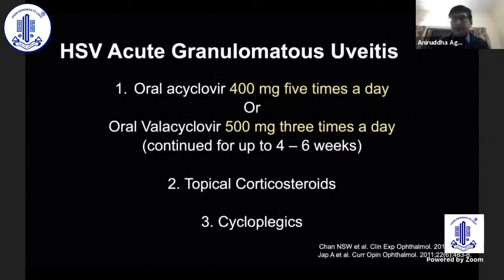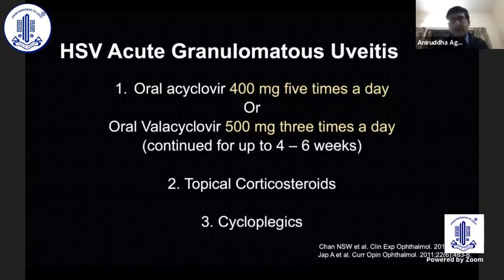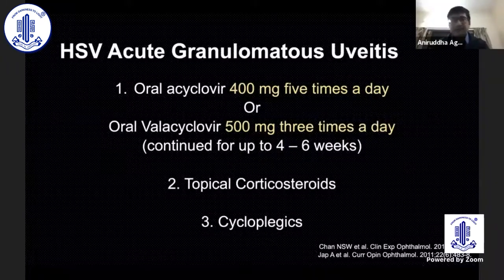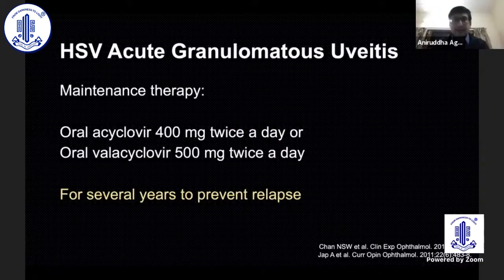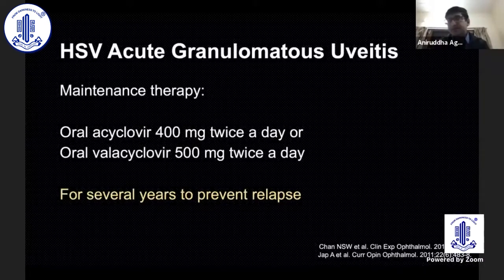For HSV anterior uveitis, treatment typically consists of oral acyclovir 400mg five times a day, or valacyclovir, which is preferred due to its lower dosing frequency — given for four to six weeks along with steroids and cycloplegics. Maintenance therapy uses acyclovir 400mg twice a day or valacyclovir 500mg twice a day for several years to prevent relapse.